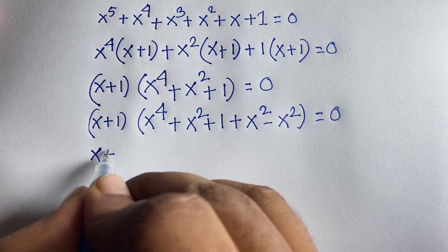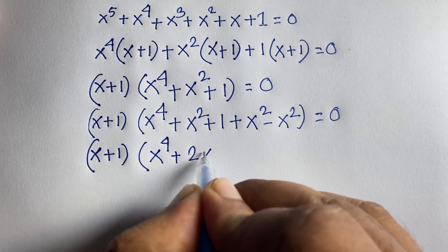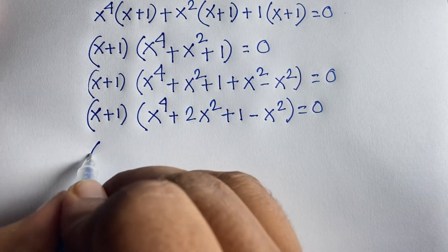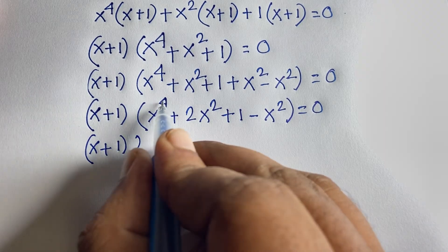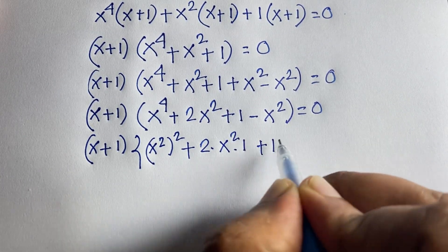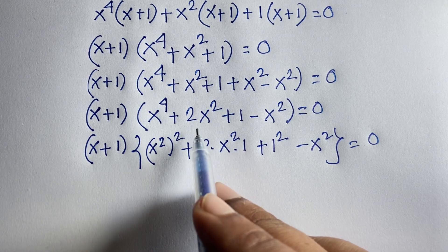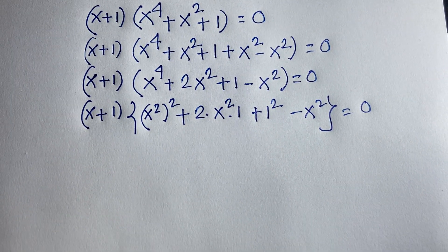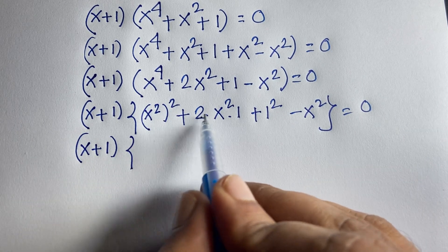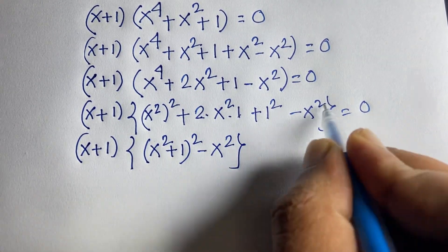Now I can say that x plus 1 times x to the power 4 plus 2x squared plus 1 minus x squared. Here, x to the power 4 plus 2 times x squared times 1 plus 1 squared is x squared plus 1 whole squared — that is the pattern a squared plus 2ab plus b squared equals a plus b whole squared. So we have x plus 1 times x squared plus 1 whole squared minus x squared is equal to 0.